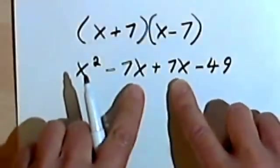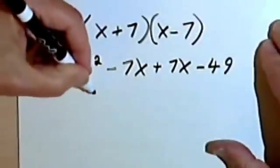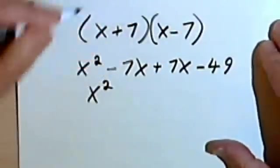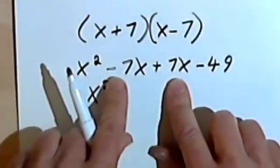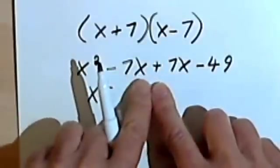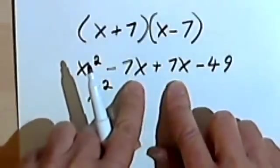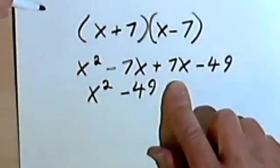Now watch what happens when I simplify this by combining the middle terms. I'm going to get x squared, and the middle terms are the same except for the sign. I've got a negative 7x and a positive 7x. So they're going to cancel each other. They're going to equal zero. And then we're just going to end up with a negative 49.